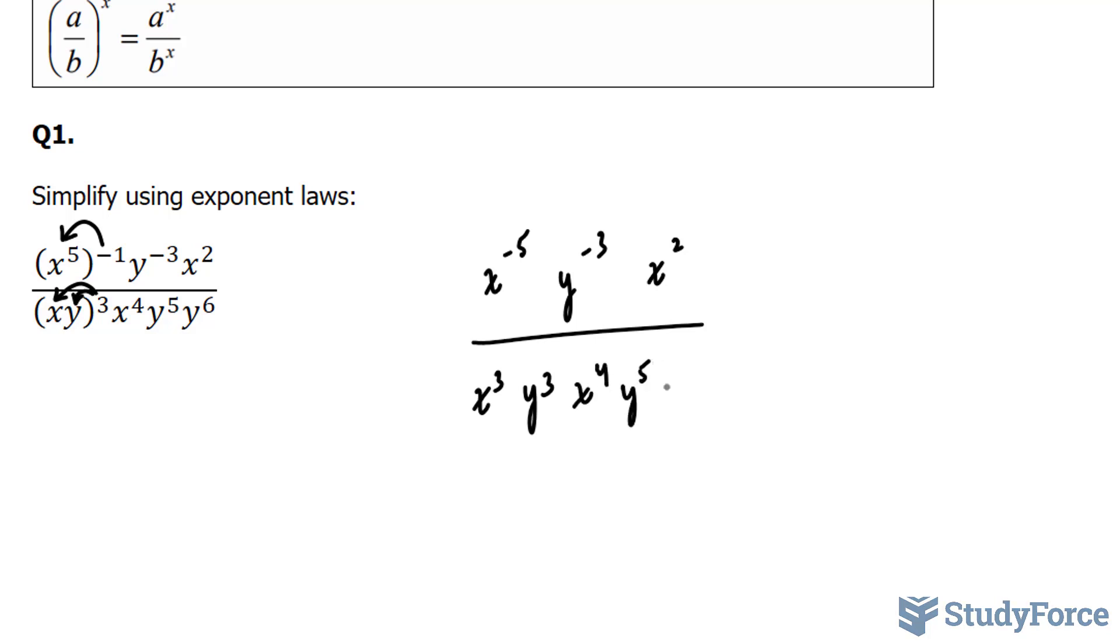Oftentimes, you'll notice that as you do these questions, it does take several steps until you figure out the simplified version. The next step is to combine all the similar variables at the top and at the bottom. For example, at the top, the numerator, we have these two x's, and they are being multiplied together.